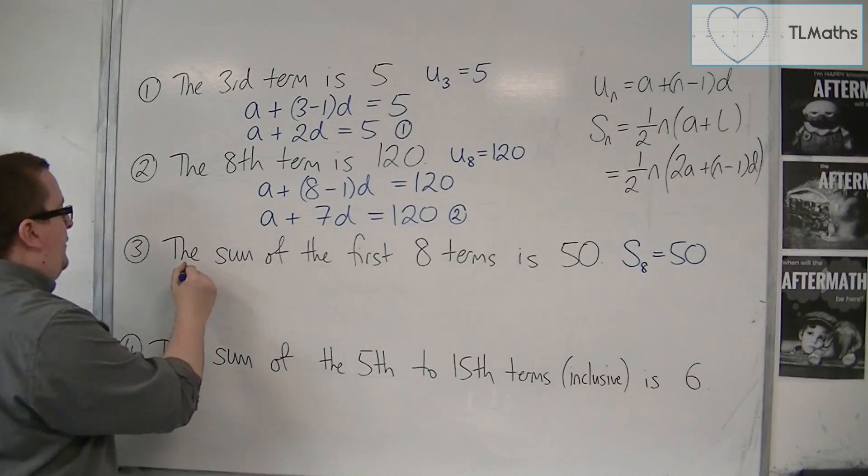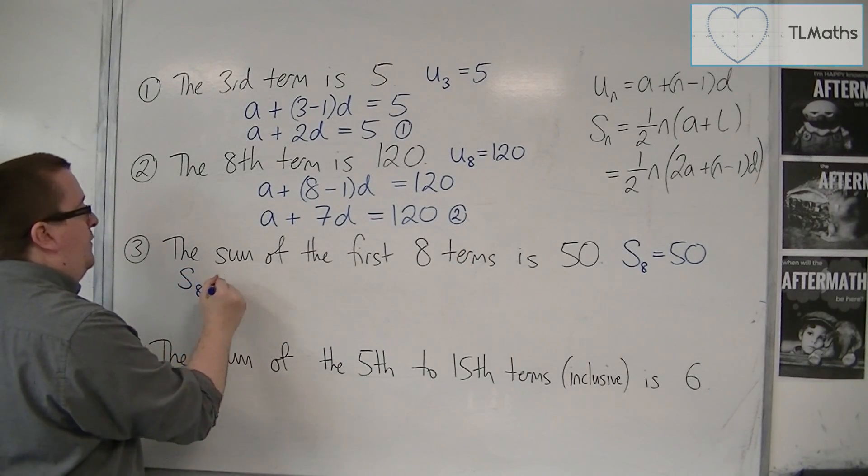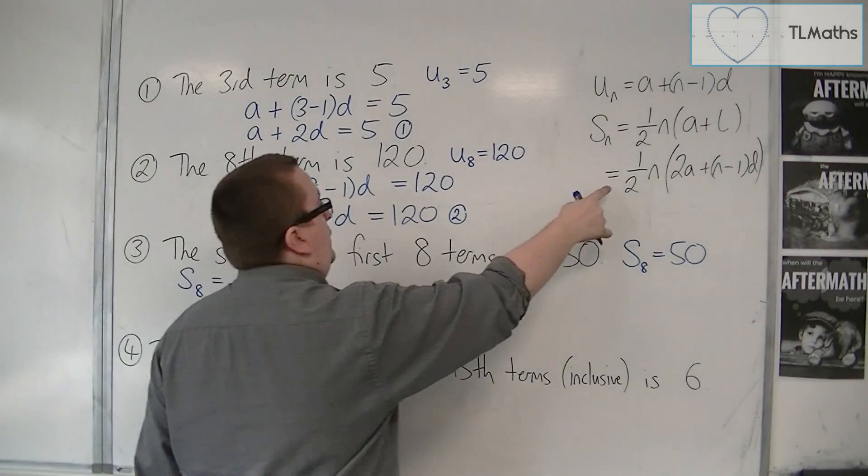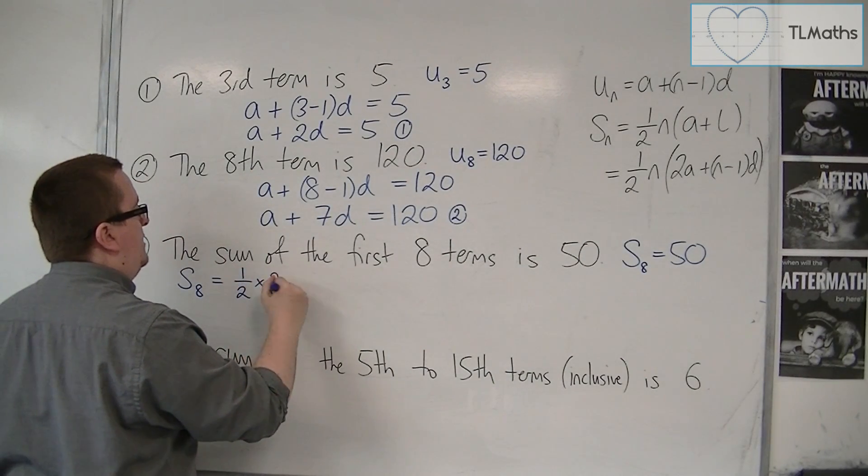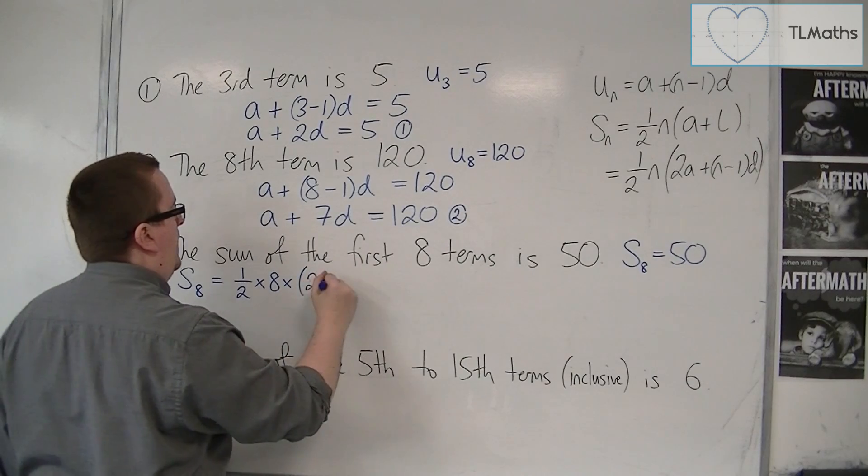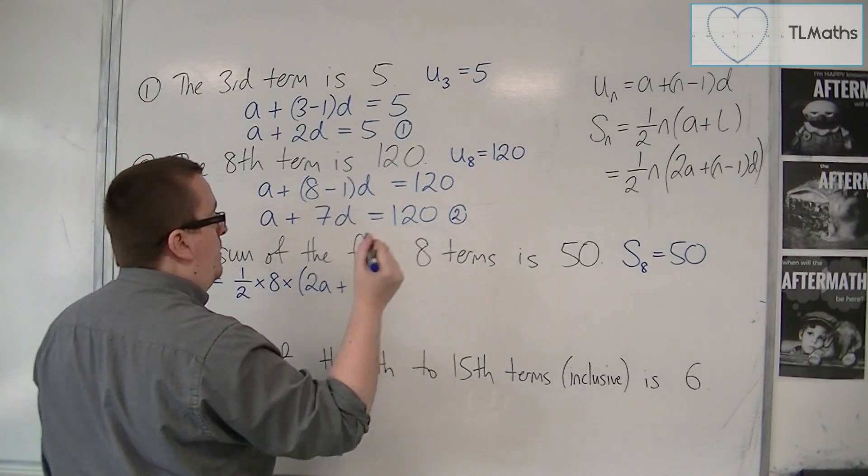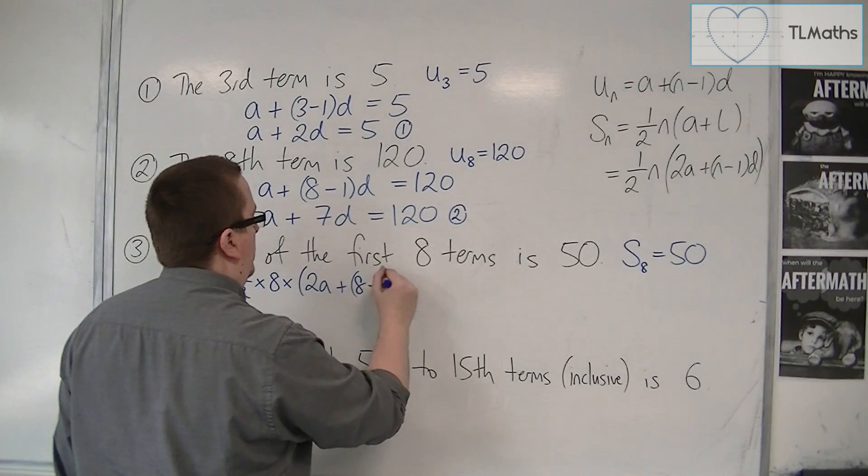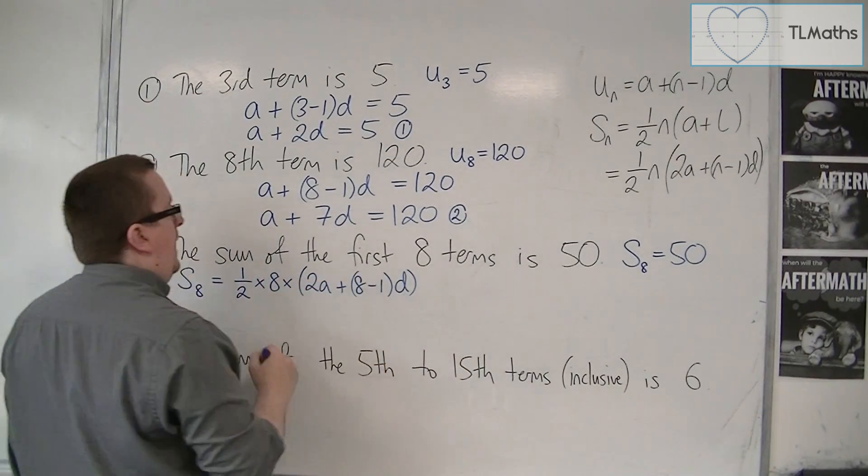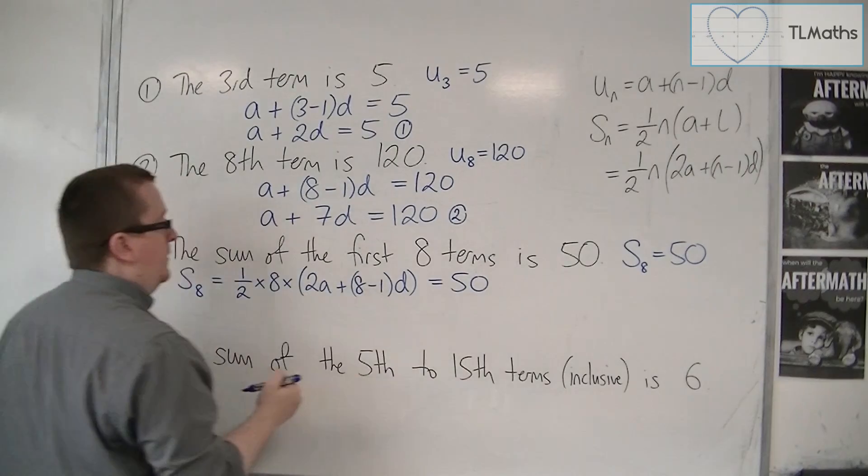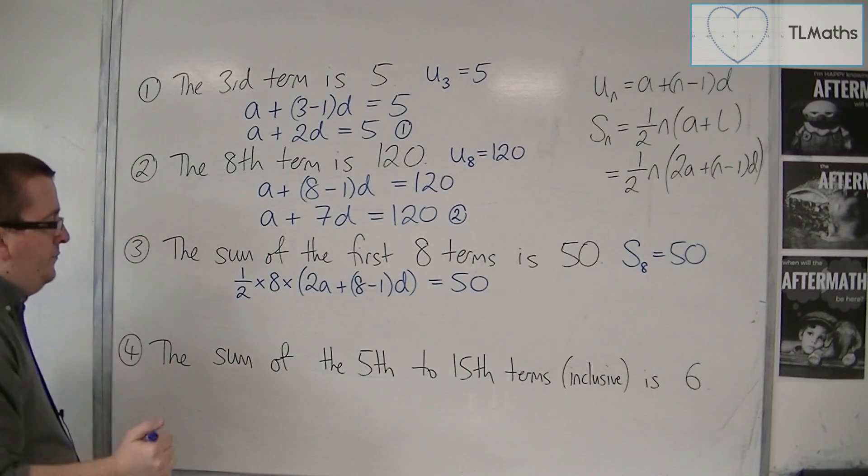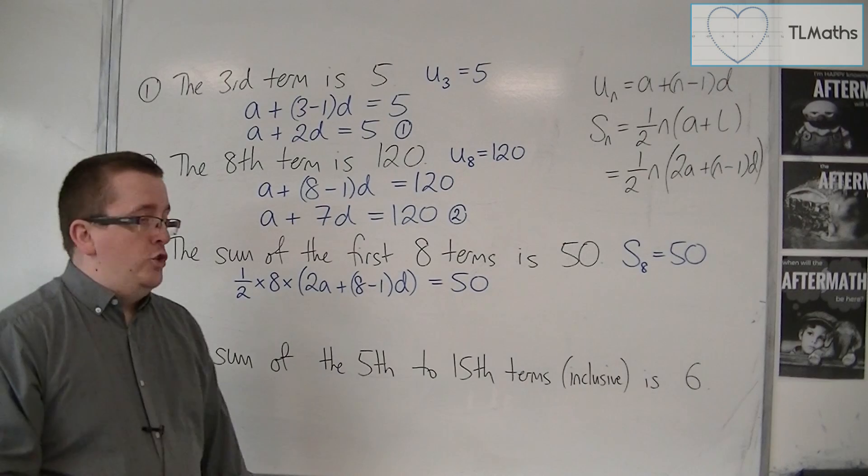So if S8 is equal to 50, S8, I know, using that formula, is one half times 8 times 2a plus 8 minus 1 times D. And I know that that must be equal to 50. This now gives me an equation.